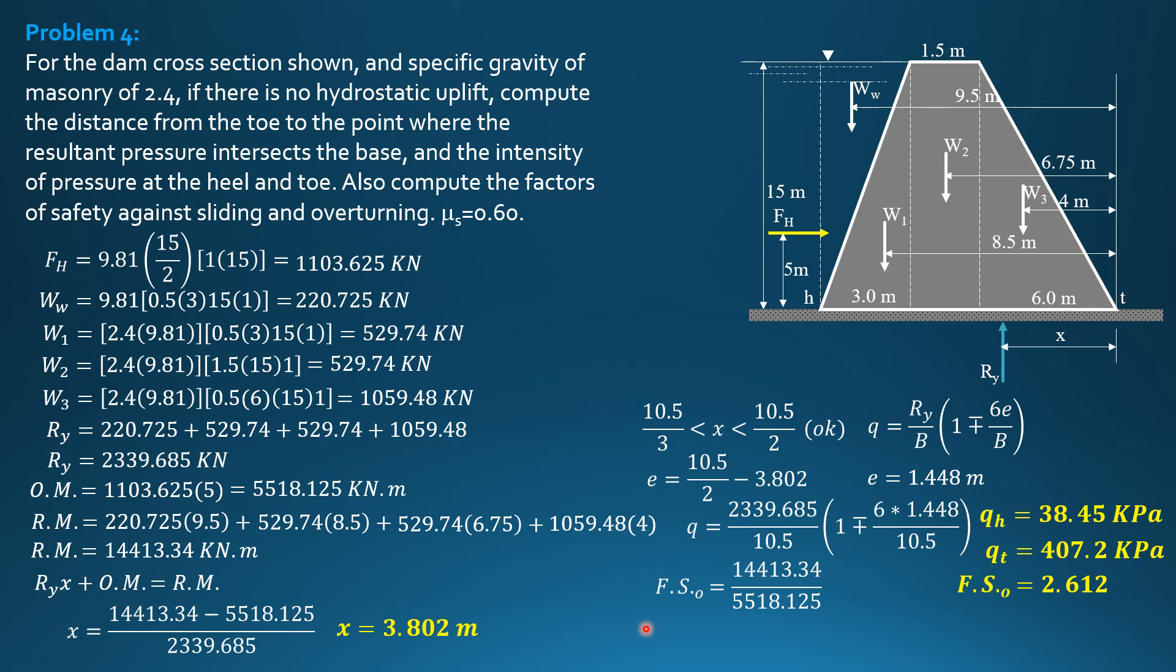Factor of safety against sliding is friction, so 0.6 times RY, 2339.685 over FH, 1103.625. So factor of safety against sliding is equal to 1.272.